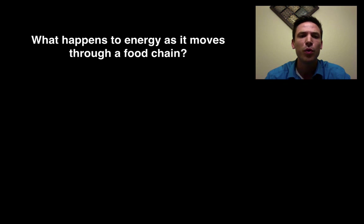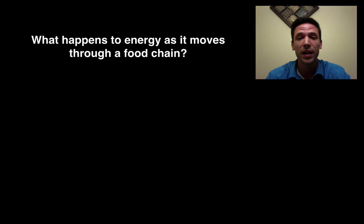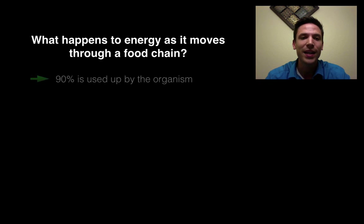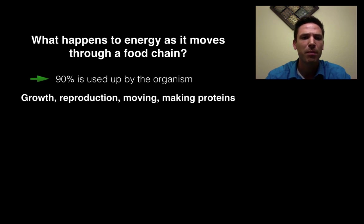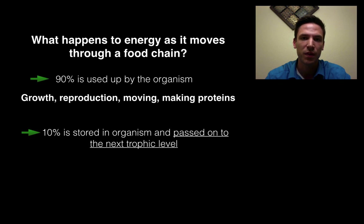What happens to energy as it moves through a food chain, from trophic level to trophic level? The energy you consume gets used up — for things like growth, reproduction, moving around, making proteins, and all the cellular processes going on. 90% of the energy consumed by an organism gets used up that way. The other 10% gets stored in the tissues of that organism, and it's that 10% that gets passed on to the next trophic level. In ecology, we call this the rule of 10: only 10% of the energy moves from level to level.